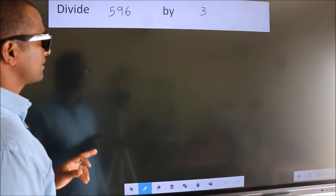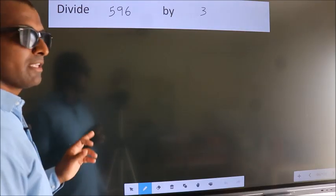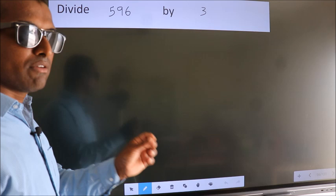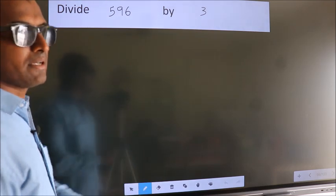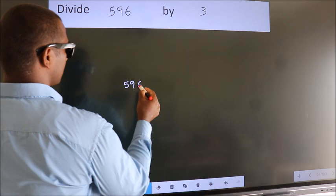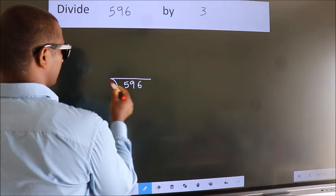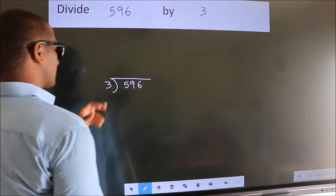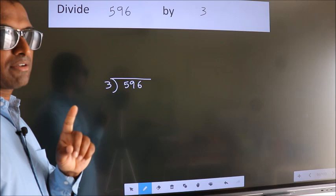Divide 596 by 3. To do this division, we should frame it in this way. 596 here, 3 here. This is your step 1.